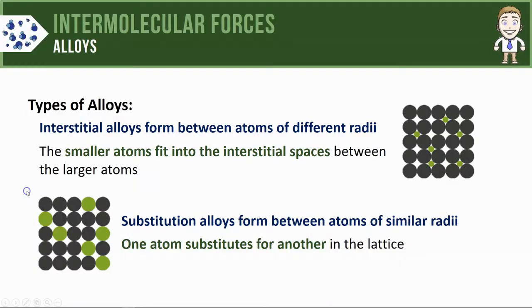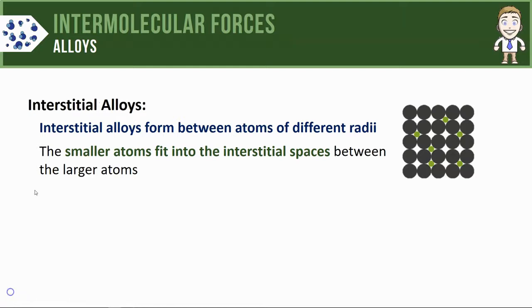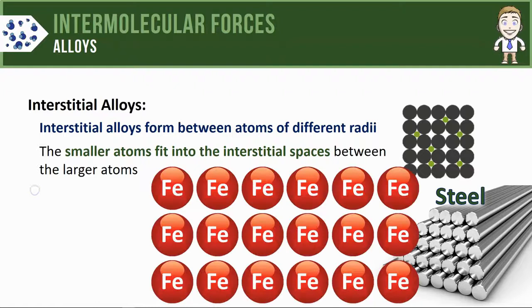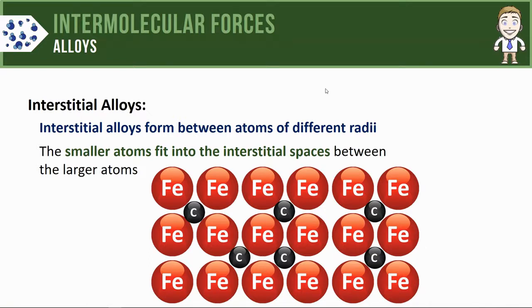The best example of an interstitial alloy and most common is steel. Steel is made of iron atoms metallically bonded, and in between the iron atoms in those interstitial spaces you'll find the smaller carbon atoms. One of the things that makes steel so important is how these carbon atoms affect the malleability of the metal.